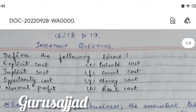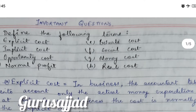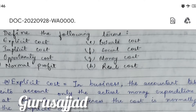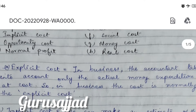The first question is: define the following terms — explicit cost, implicit cost, opportunity cost, normal profit, private cost, social cost, money cost, and real cost. There are many terms given here. If any two of them come to your exam, please remember and understand them. Let's start with the answers.